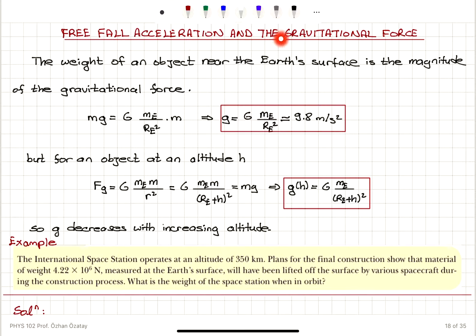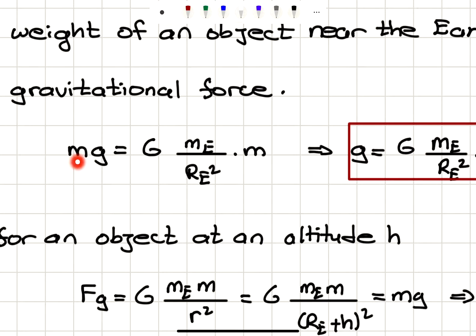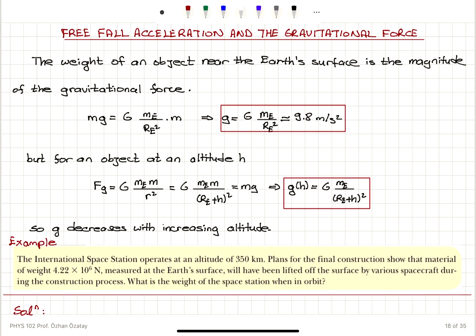Free fall acceleration and the gravitational force. The weight of an object near the Earth's surface is the magnitude of the gravitational force. As we have seen previously, the weight of the object is mass times the gravitational acceleration g, which equals the universal gravitational constant G times the mass of the Earth divided by the radius of the Earth squared, times m. This is for an object on the Earth's surface.